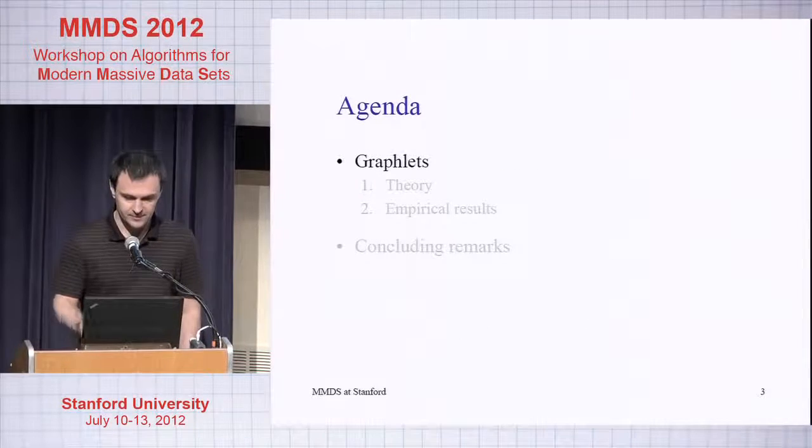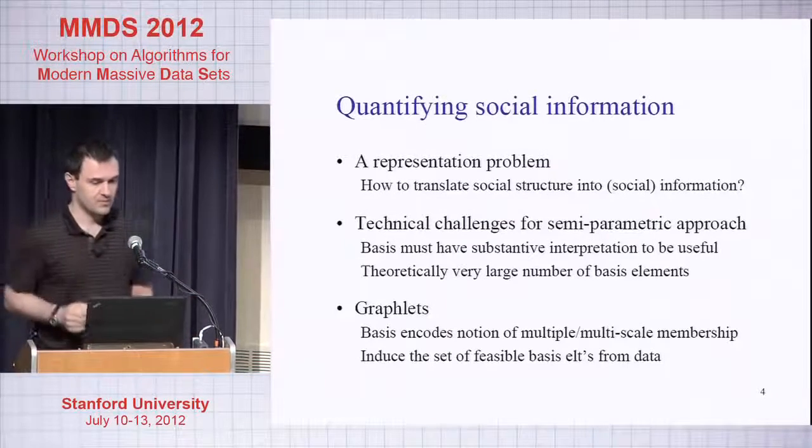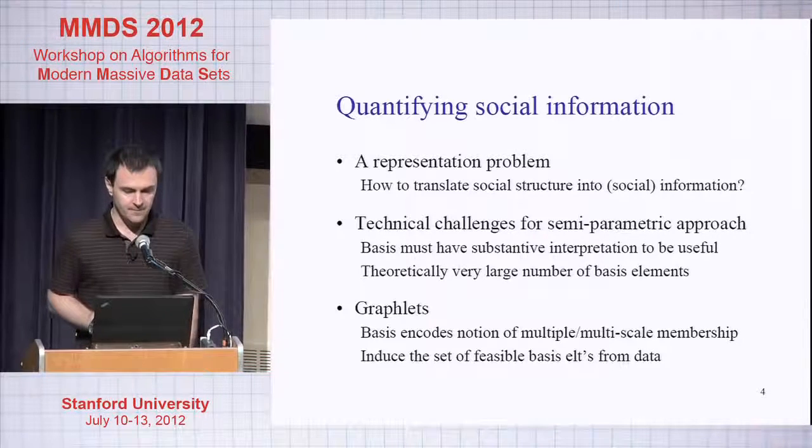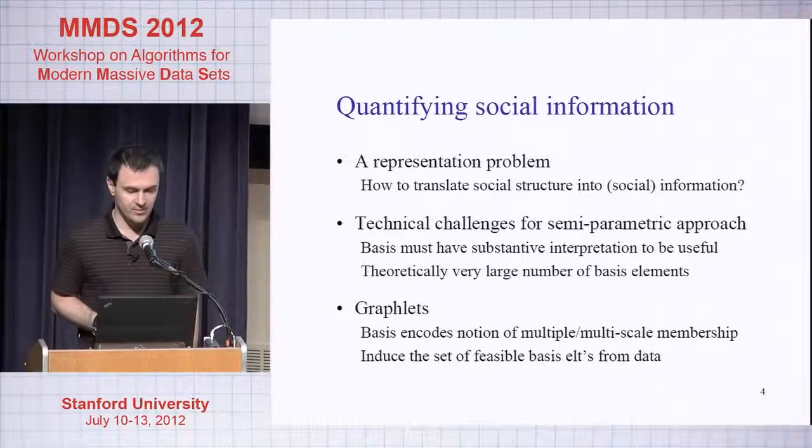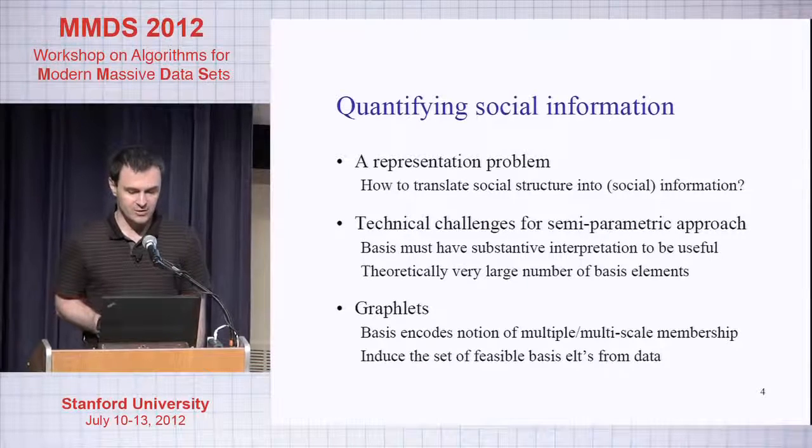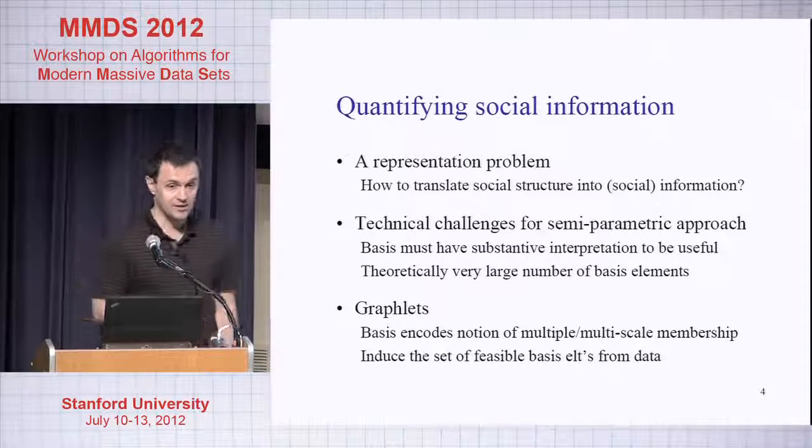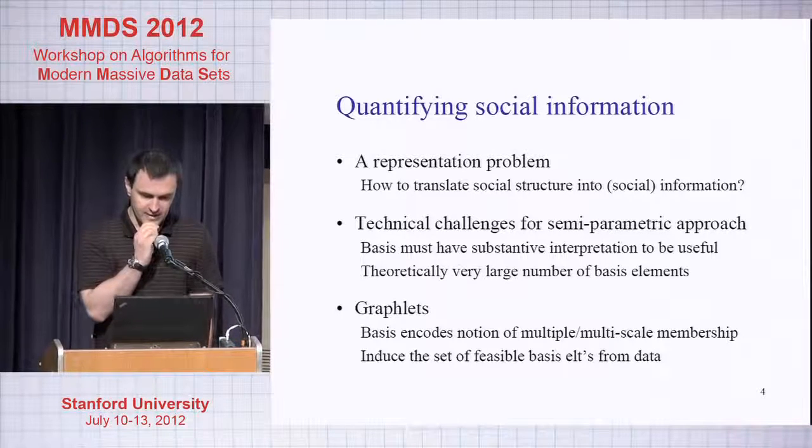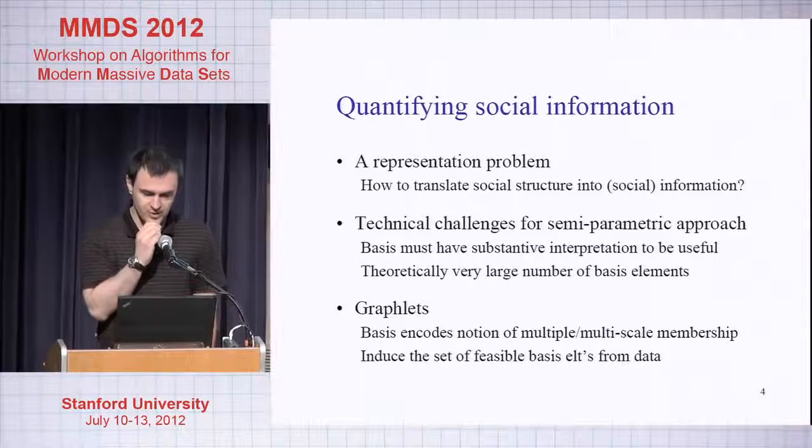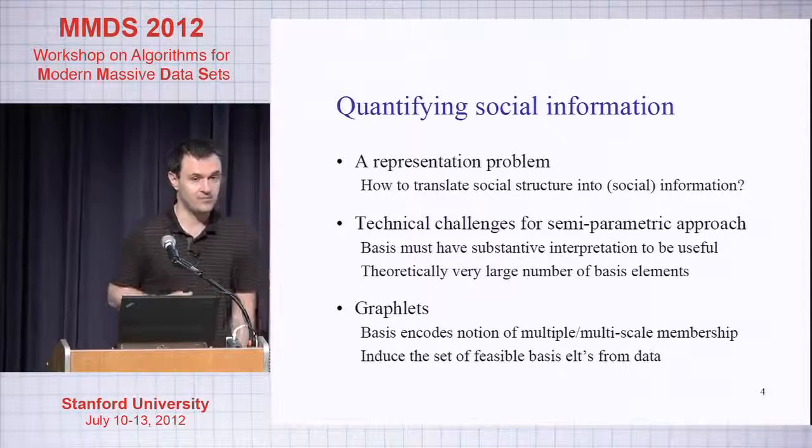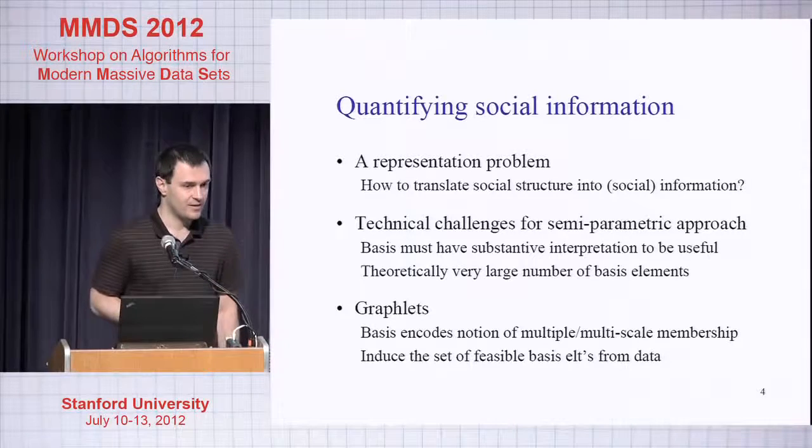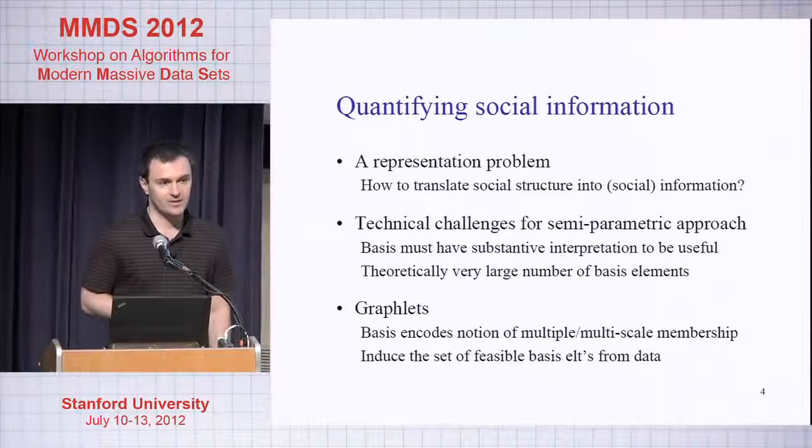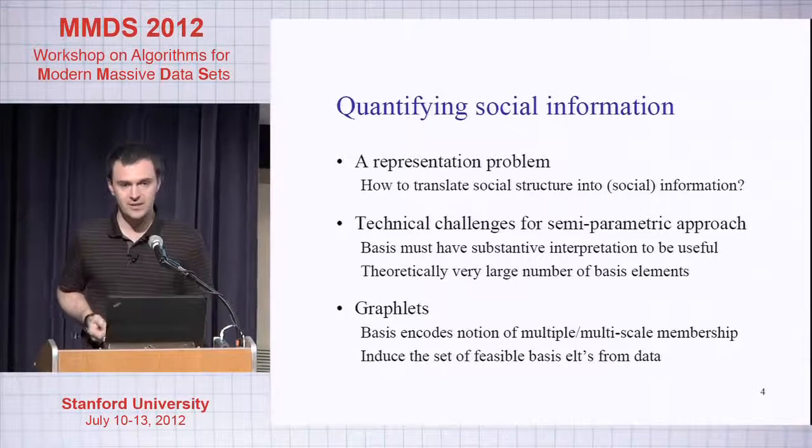So I guess the scientific problem is how to quantify social information. It is a representation problem. How to translate the social structure into social information. The technical challenges for the semi-parametric approach is that in the classical statistical sense we're going to have a model that depends on a set of basis and we want this basis to be interpretable.